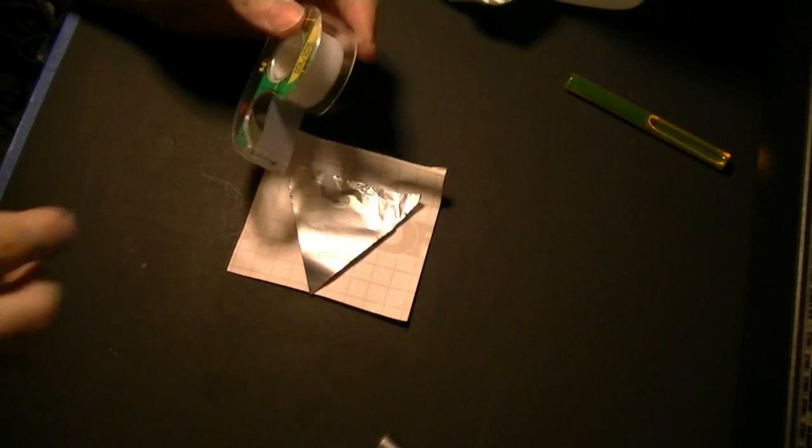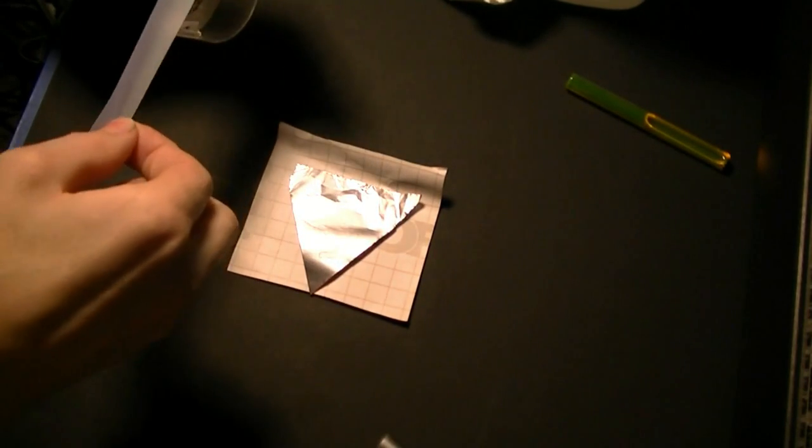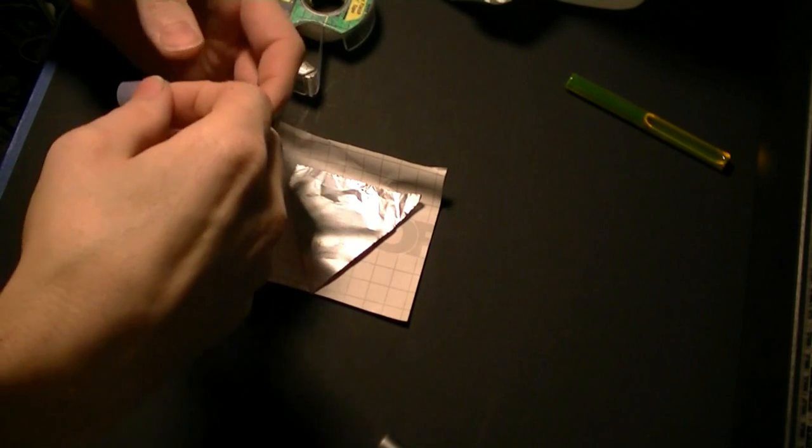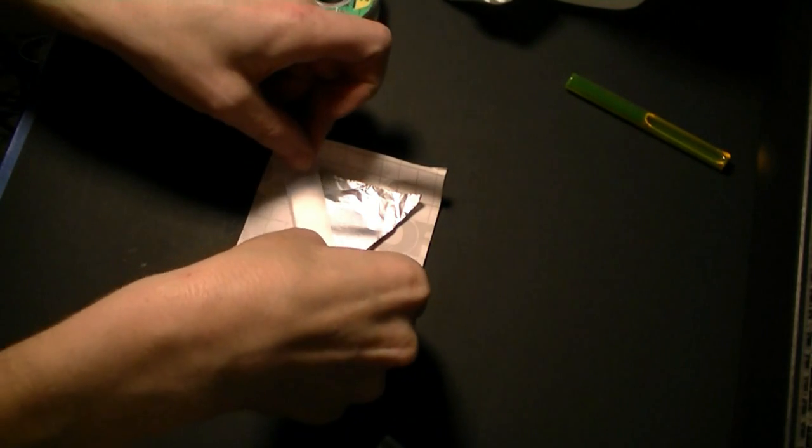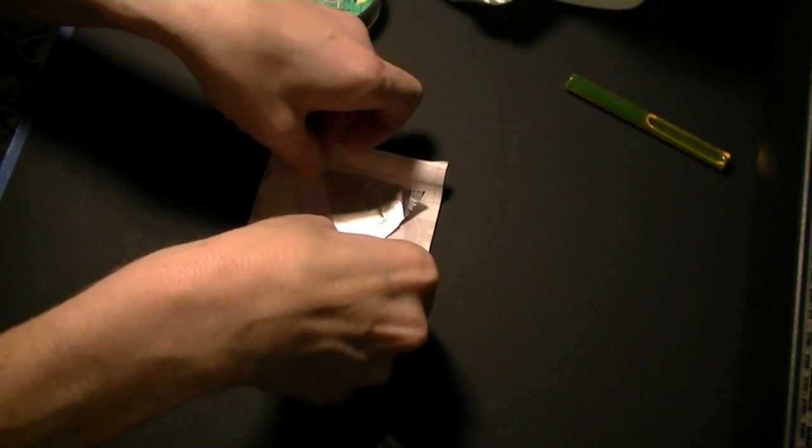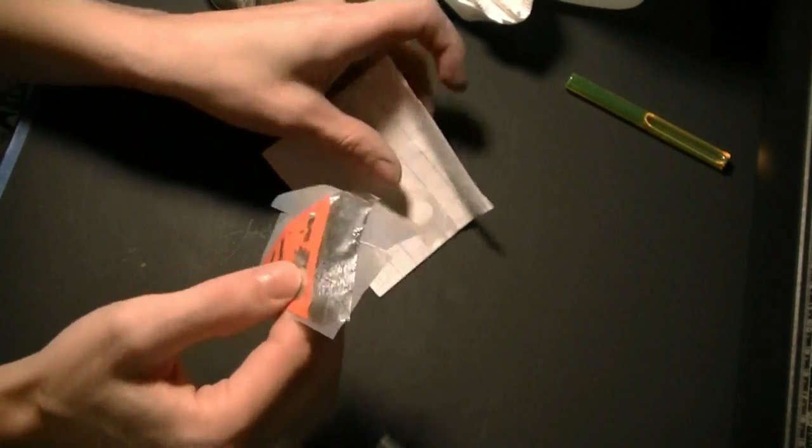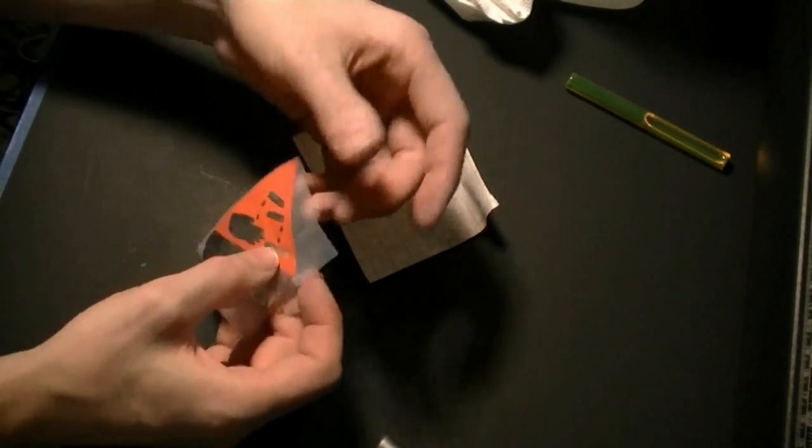When I was satisfied with the etch, I removed it from the bath, rinsed it and dried it, and then applied tape to the back side. This will be the side that the light will shine through. The tape adds strength to the fragile foil and prevents the phosphors from leaking out through the pores.